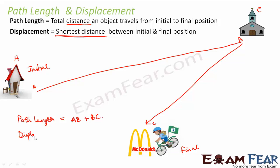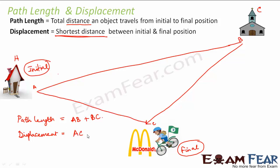Now what will be the displacement in this case? Displacement is the shortest distance between initial and final position. This is my initial position and this is my final position. When I talk of displacement, I am not bothered about the path the boy followed — whether he went via the church or not. I am only bothered about the initial position and the final position, and the shortest distance between these two points. So displacement is AC.